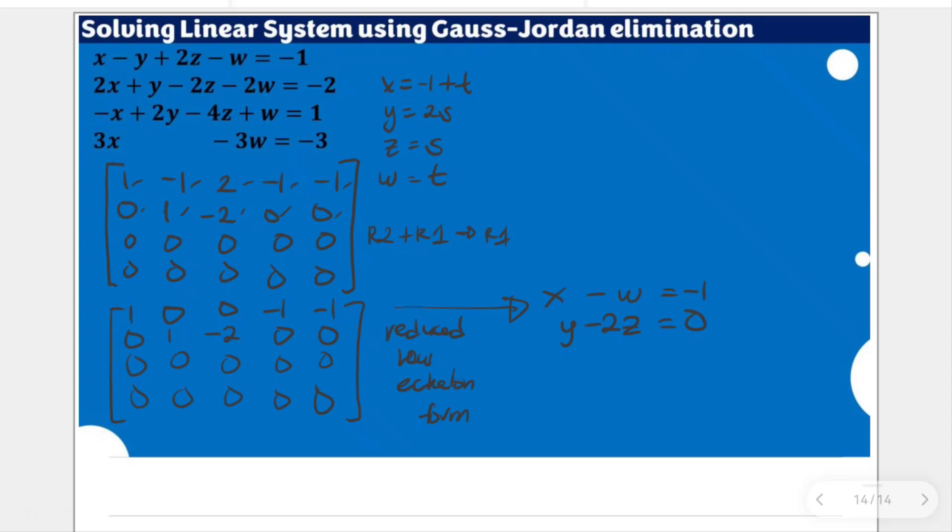Now again, we don't have exact values for z and w, even x and y, but we can represent them with arbitrary variables. So since we used t in the Gaussian elimination in the previous video, let's also use t for w and s for z. With that, this will become y - 2s equal to 0, y is equal to 2s.